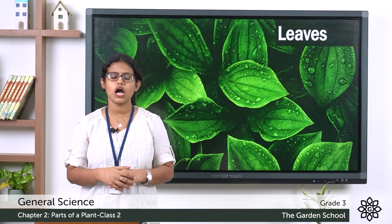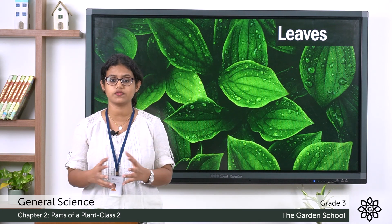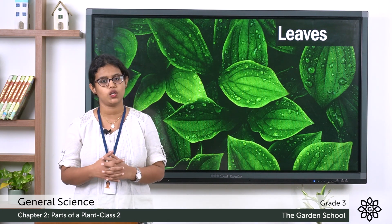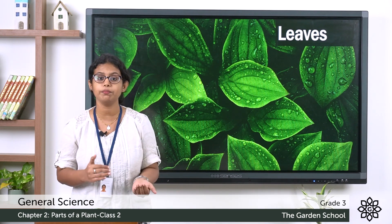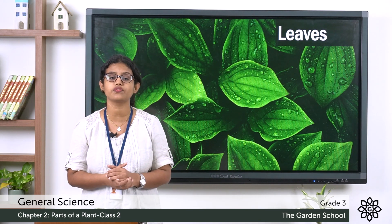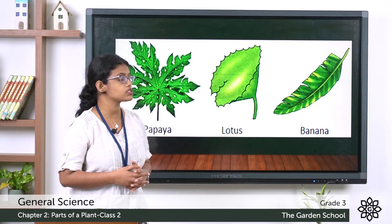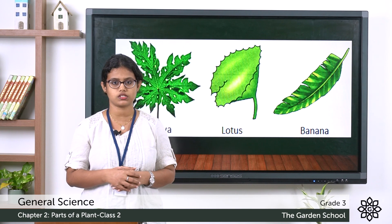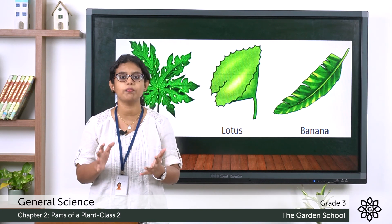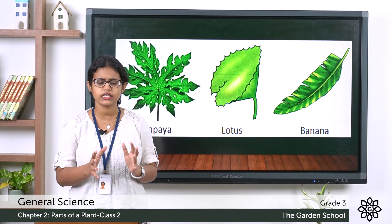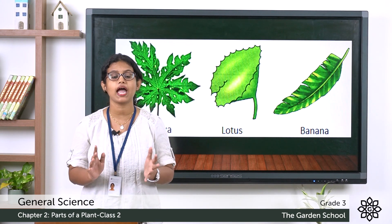Are all leaves the same? If you look at the trees around you and observe their leaves, you will see that they are not all the same. Leaves may differ based on their shape and size, and you can even identify a plant based on its leaf. Here you can see three different types of leaves: the leaf of a papaya, the leaf of a lotus, and the leaf of a banana. They differ in their shape and size.